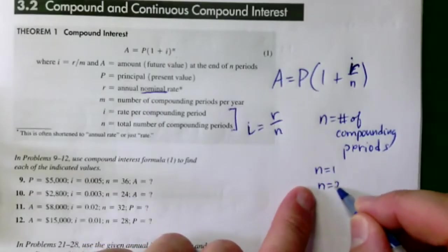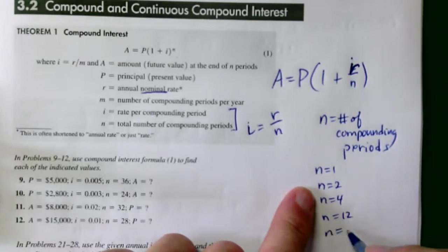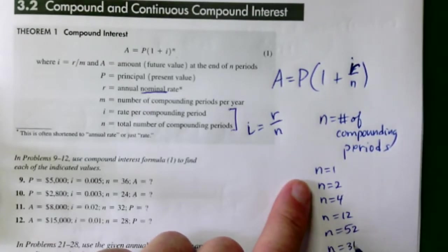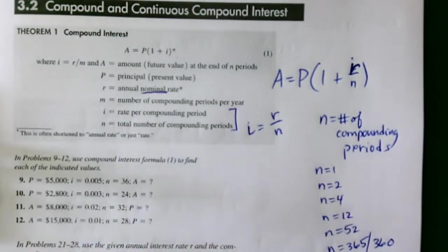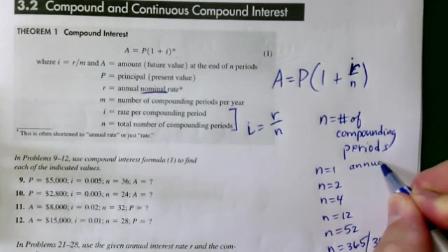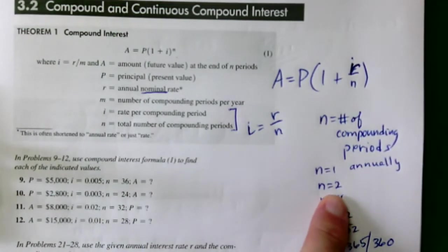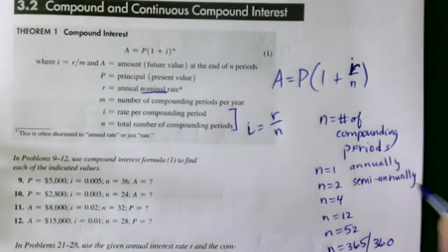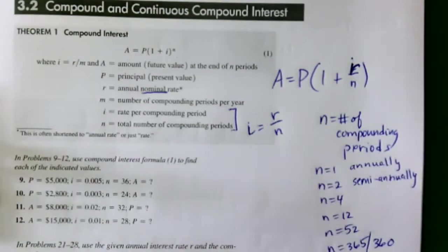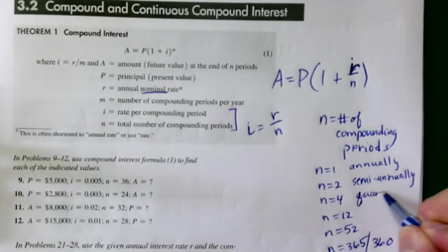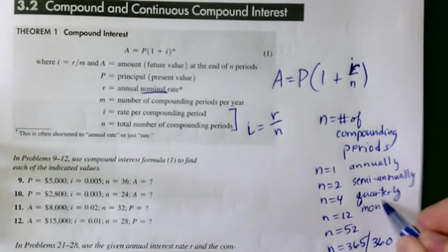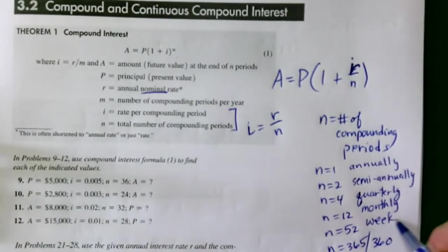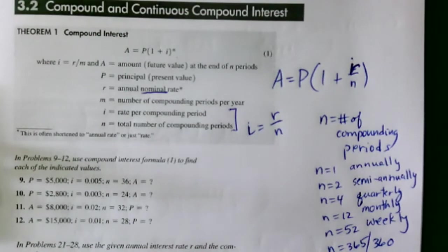There are only a few possible values of N used in these problems, corresponding to different time periods. For daily compounding, they might use 365 or 360. If compounded annually, N equals 1. Semi-annually gives N equals 2, quarterly equals 4, monthly equals 12, weekly equals 52, daily equals 365. Then there's a new one — continuously — but the continuous formula is separate and we'll get to that later.